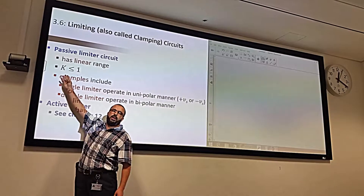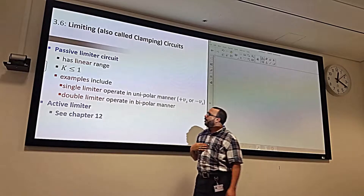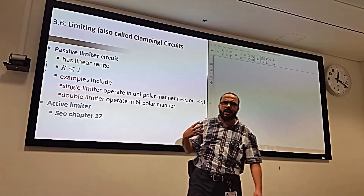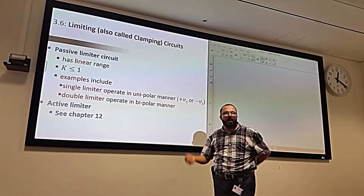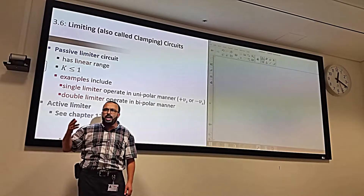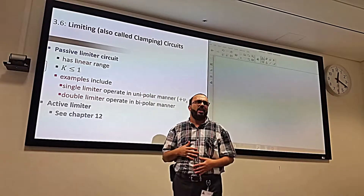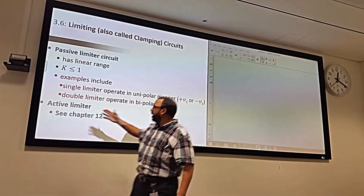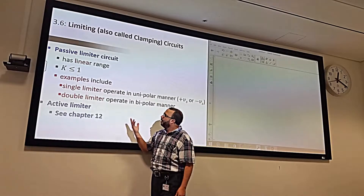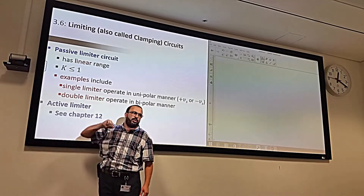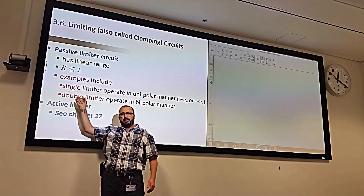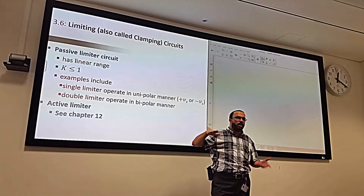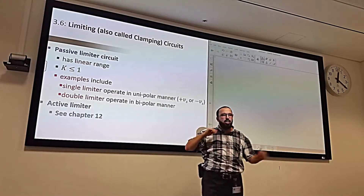For passive limiters, K needs to be constant — that's all. There's no requirement on K being less than or greater than one. In terms of the limits, we have two types: single limiter and double limiter. A single limiter has only one limit — the output is limited on one threshold only. There's only one linear region and one limited region.